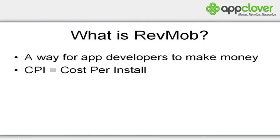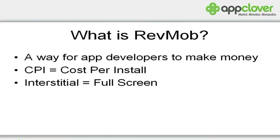Basically, the way it works is users get to see an ad, and if they don't do anything, you don't get any credit for it. But if they do make a download, that's when you actually get some credit. And the credit in this case turns out to be really good money compared to many other monetization methods. That's why Rev Mob is so powerful.